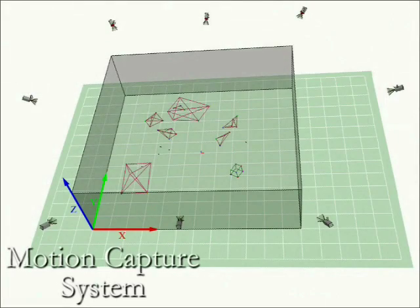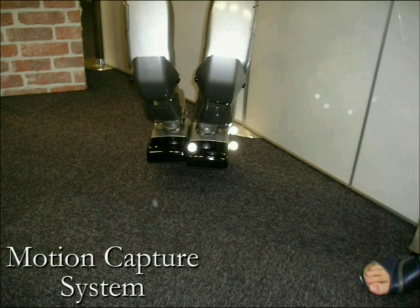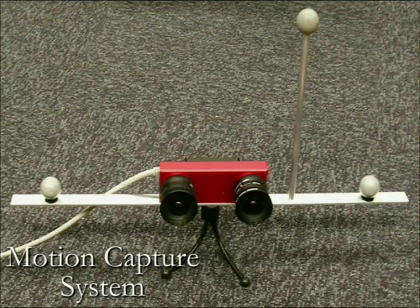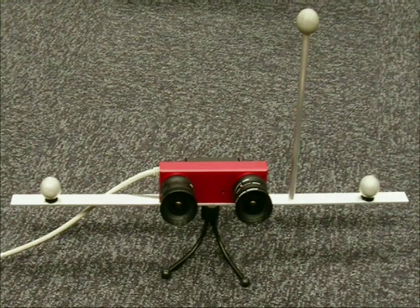We have instrumented a large laboratory space with a motion analysis motion capture system. By equipping objects with retro-reflective markers, we are able to localize and track a variety of objects simultaneously. This includes the robot, obstacles, and also various sensors.